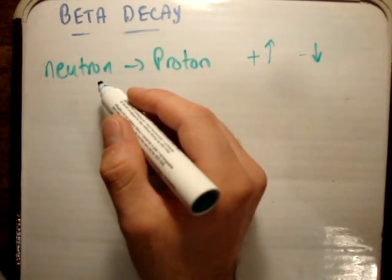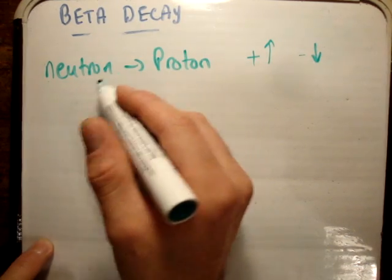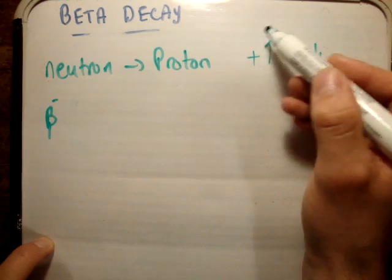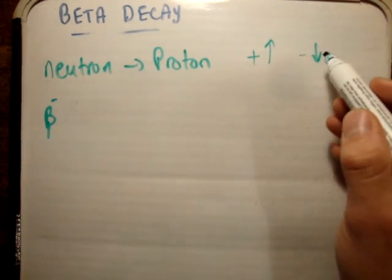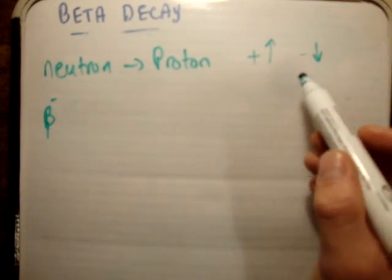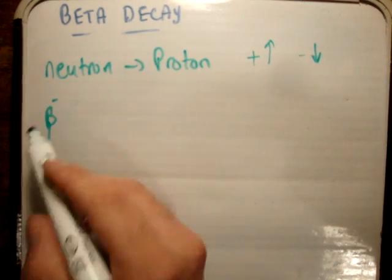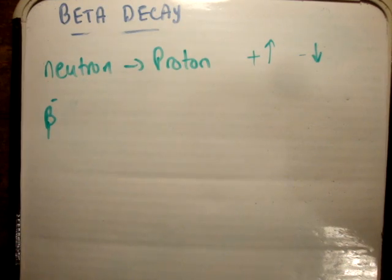So let's look at the conversion process. A neutron going to a proton is called beta minus decay. And why is it called beta minus? I know I said the positive charge is going up. But what happens is we're talking about what particle is emitted. And the particle emitted, in order for the positive charge to go up, is negative charge, which is a beta minus particle.